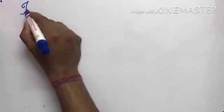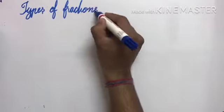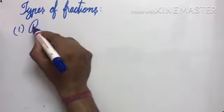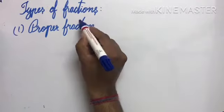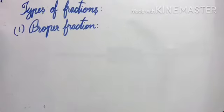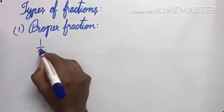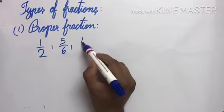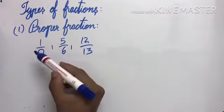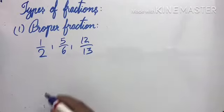First type is proper fraction. A fraction whose numerator is less than the denominator is a proper fraction. For example: 1/2, 5/6, 12/13 — in all these the numerator is smaller than the denominator. Such fractions are called proper fractions.